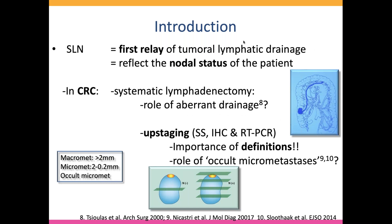In colorectal cancer, it's a little bit different because when we resect the primary, we also perform a systematic lymphadenectomy. But it has been shown in the literature that some patients — about six to eight percent — can have an aberrant vein. Using an in vivo sentinel lymph node technique can allow us to guide the surgery and modify the resection. But most of the time, we use the technique to upstage patients, as in breast cancer and melanoma, performing more advanced pathology techniques.